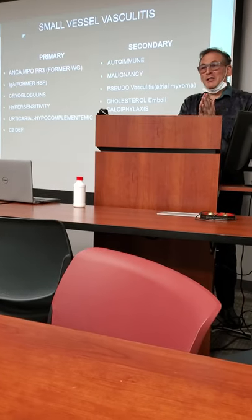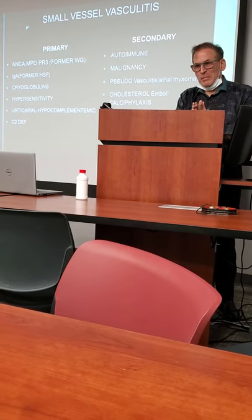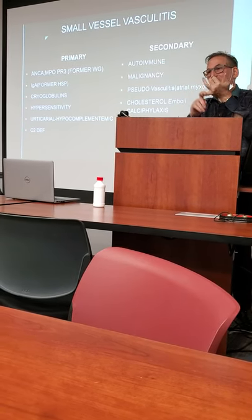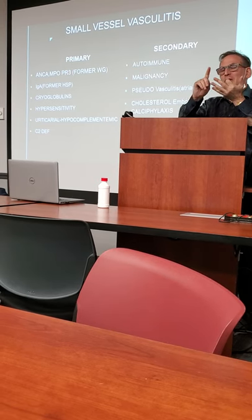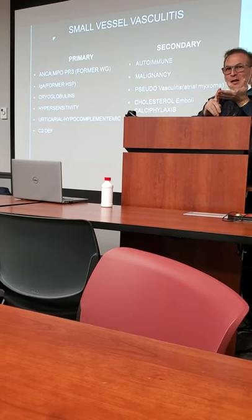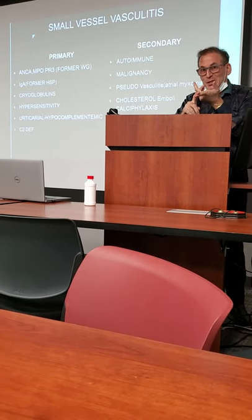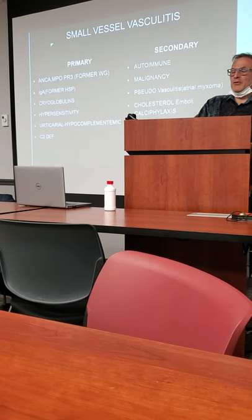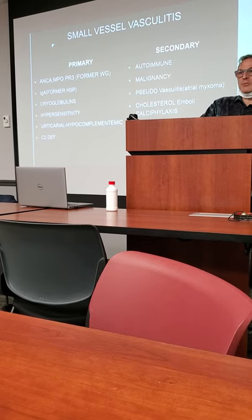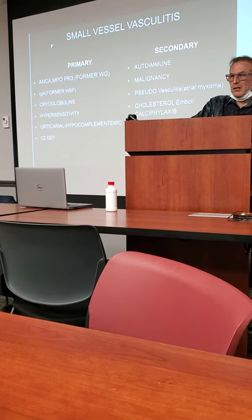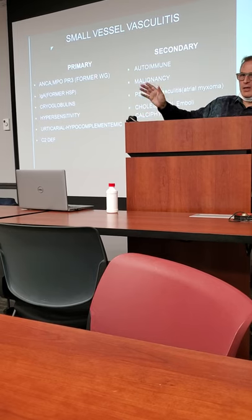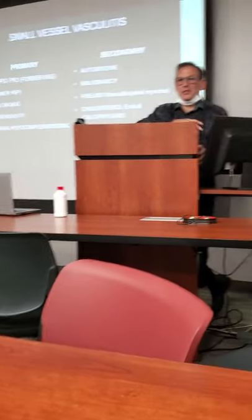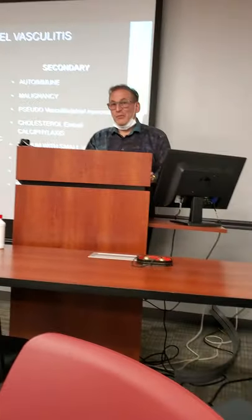IgA vasculitis, formerly called Henoch-Schönlein purpura — please know the five components: monoarthritis, severe abdominal pain, non-thrombocytopenic purpura (palpable purpura with normal platelets), renal failure, and the disease usually comes after a respiratory infection. If children get it, it goes away. If adults get it, you're dealing with rituximab, Cytoxan, plasmapheresis — everything available — trying to manage the kidney failure.